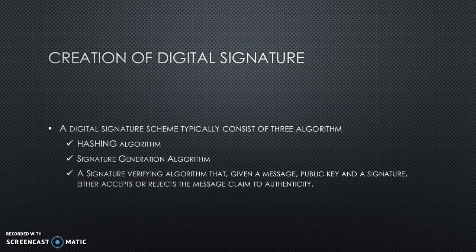Creation of digital signature. A digital signature scheme typically consists of 3 algorithms: a hashing algorithm, a signature generation algorithm, and a signature verifying algorithm — which, given a message publicly and a signature, either accepts or rejects the message's claimed authenticity.